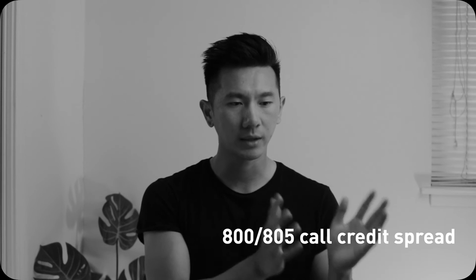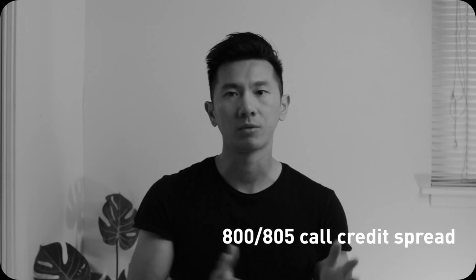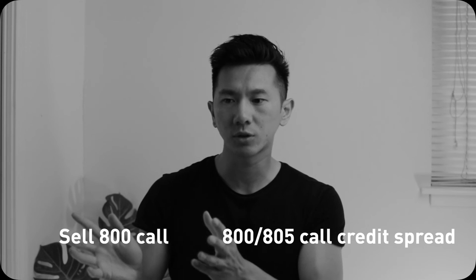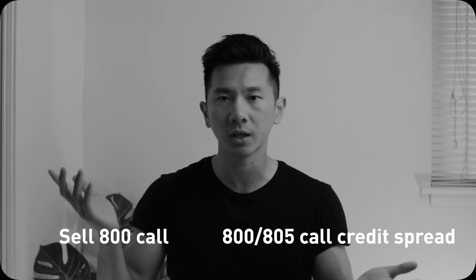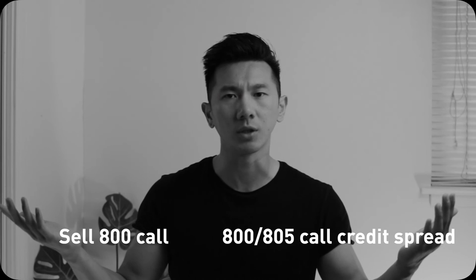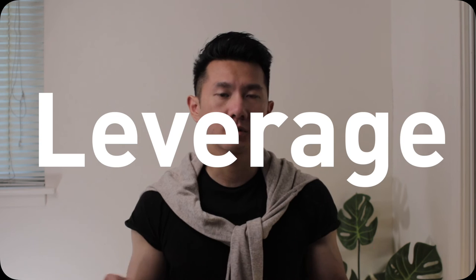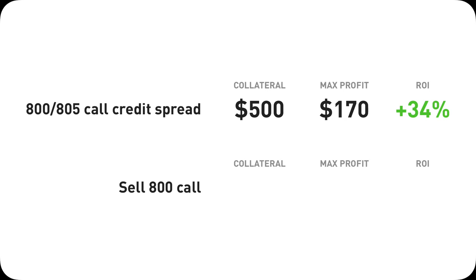So why would you want to open an $800/$805 call credit spread versus just selling an $800 strike call, even though the win condition is the same — that Tesla will stay below $800? We're talking about spreads here, so the answer is always leverage. With leverage, you can use a little bit of money to win big. In the $800/$805 call credit spread case, you only need $500 collateral to make a max profit of $170, which is a 34% return. You make 34% profit in 1.5 weeks with this call credit spread — that's great.